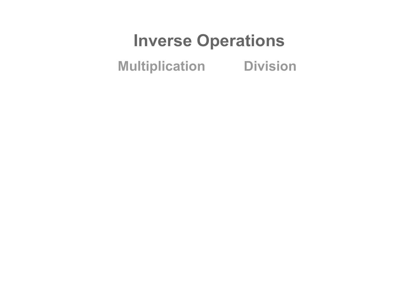Division is the inverse operation of multiplication. 12 divided by 2 equals 6 because 2 times 6 equals 12. The inverse operation, division, undoes the operation, multiplication. 5 times 4 is 20, so 20 divided by 5 is 4.